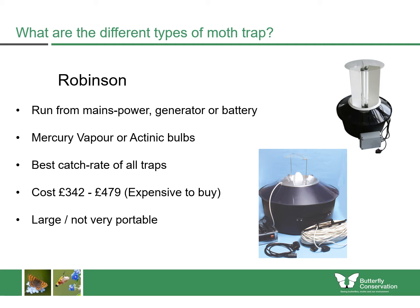Robinson traps are considered to be the best in terms of size of catch, although that is also very much dependent on the type of bulb you are using. However, they are the most expensive traps. They seem to start at around £340 and go up to over £450, again dependent on the type of bulb. These are the largest of the traps and do take up quite a bit of space — something to consider before you buy one, as they do not collapse.